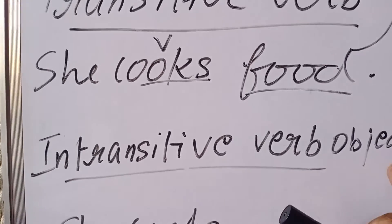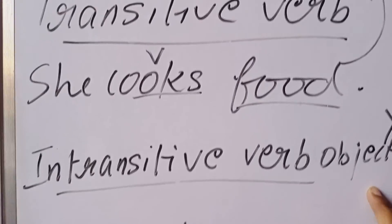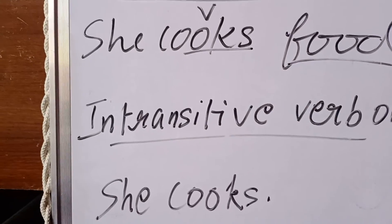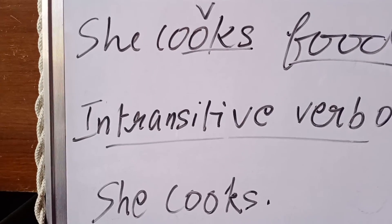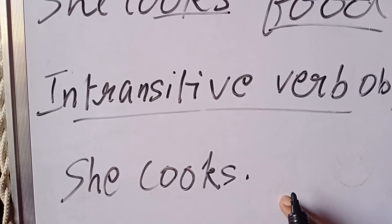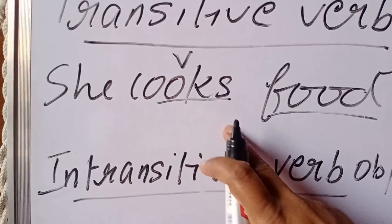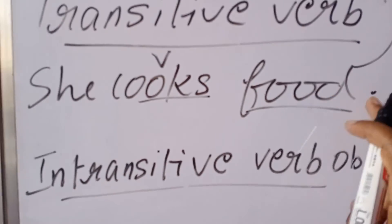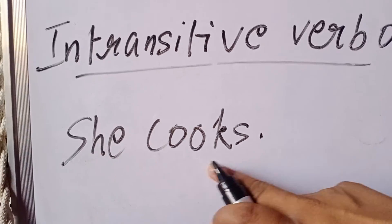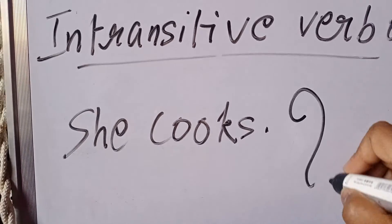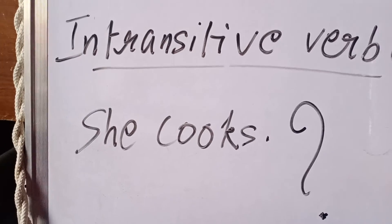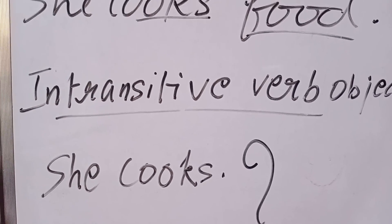So intransitive verbs do not require an object. I have taken the same sentence — 'She cooks food': food is my object, so that is transitive. 'She cooks': there is no object, that is intransitive. What does it mean? That is the question — no answer means intransitive verb. I hope it is clear.